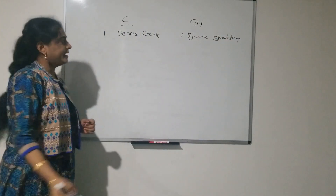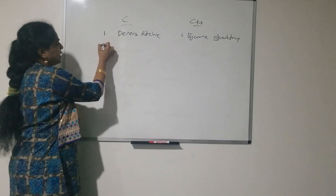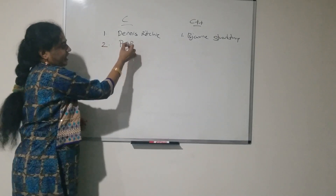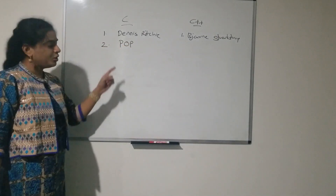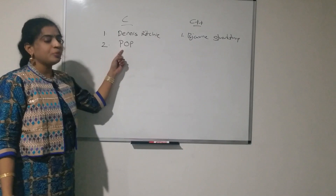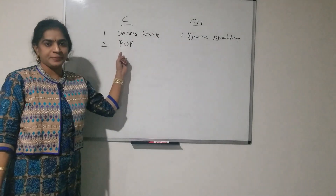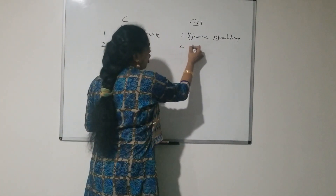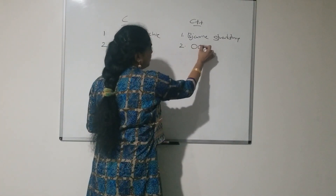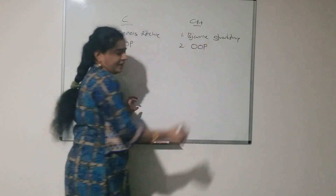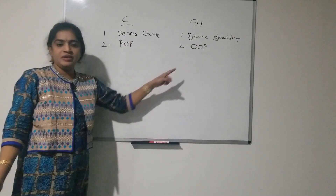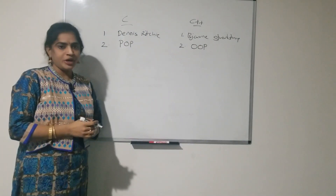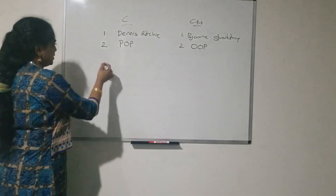Next, C is a procedure oriented programming language. Here we will use procedures, and C++ is an object oriented programming language. Here we will use objects.